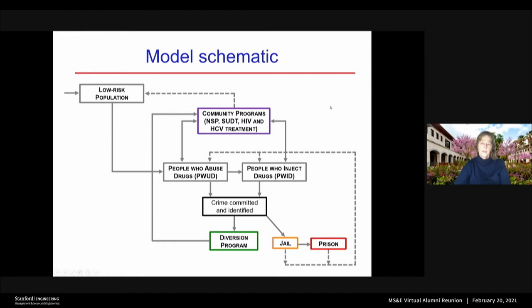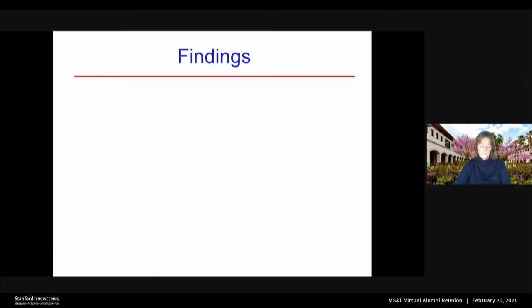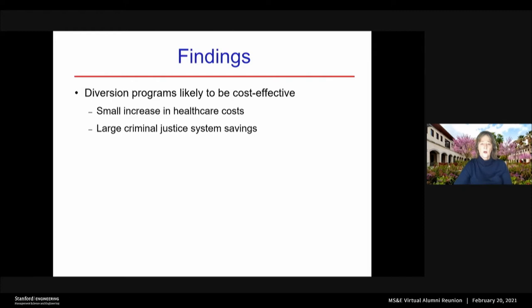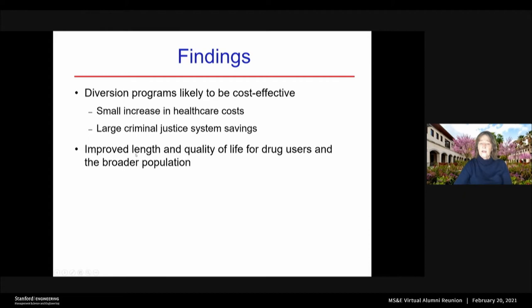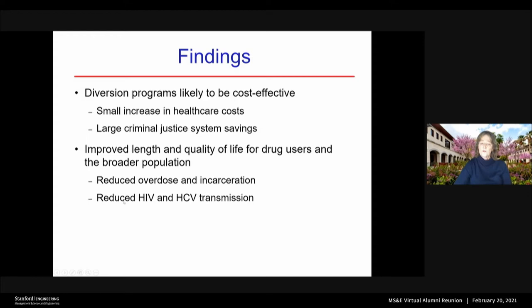She made a microsimulation model of the Seattle adult population. What did she find out? She found that diversion programs are likely to be cost-effective. They lead to a small increase in health care costs but large criminal justice savings. In addition, they improve length and quality of life for both drug users and the broader population. For drug users, they reduce overdose and incarceration. For drug users and people they may have contact with, they reduce the transmission of HIV and hepatitis C.